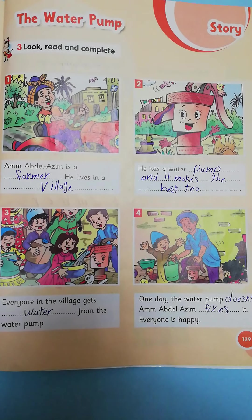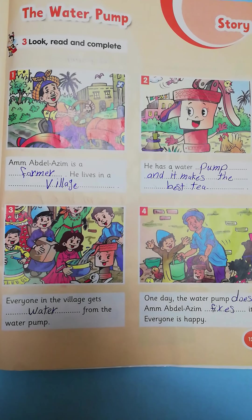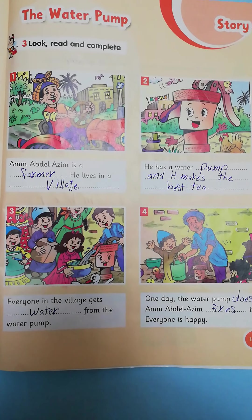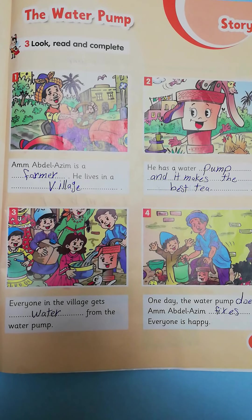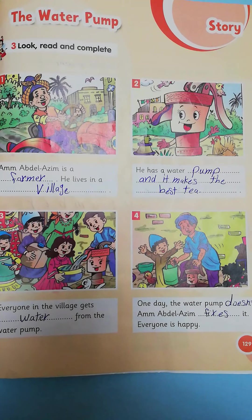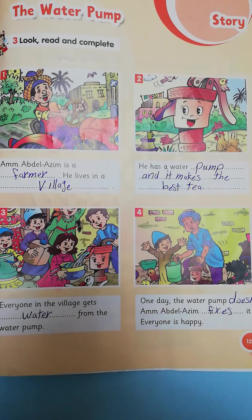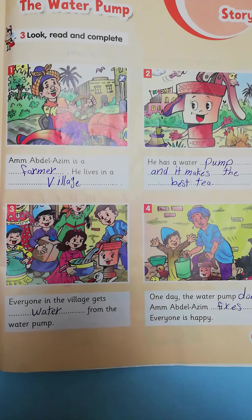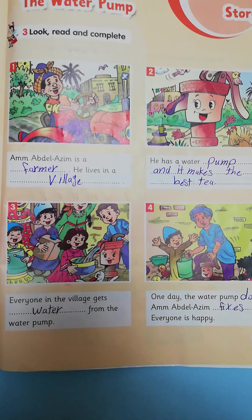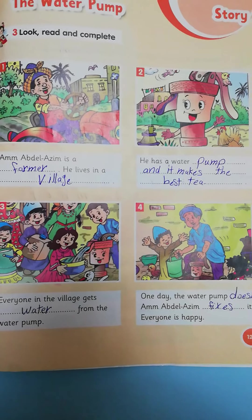Exercise 3: Look, read, and complete. Number 1: Am Abdul Azim is a farmer. He lives in a village. Number 2: He has a water pump and it makes the best tea in the village. Number 3: Everyone in the village gets water from the water pump.